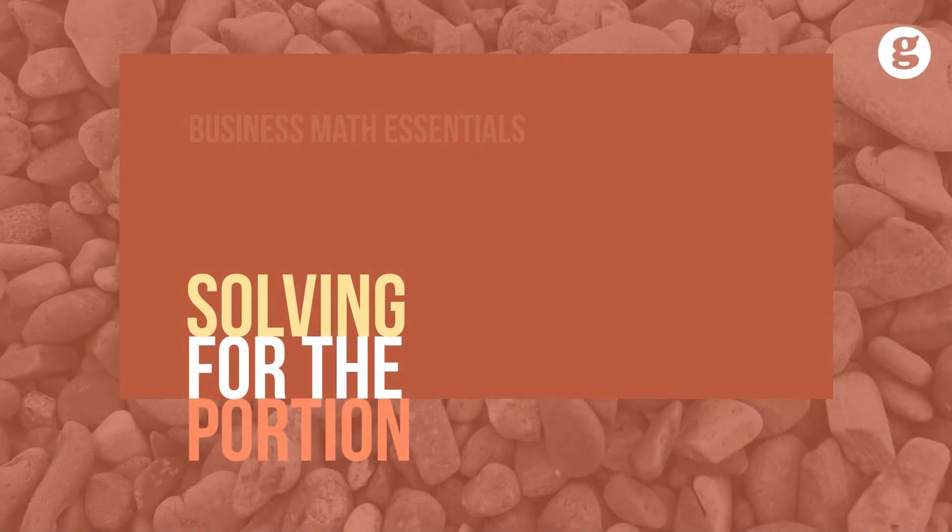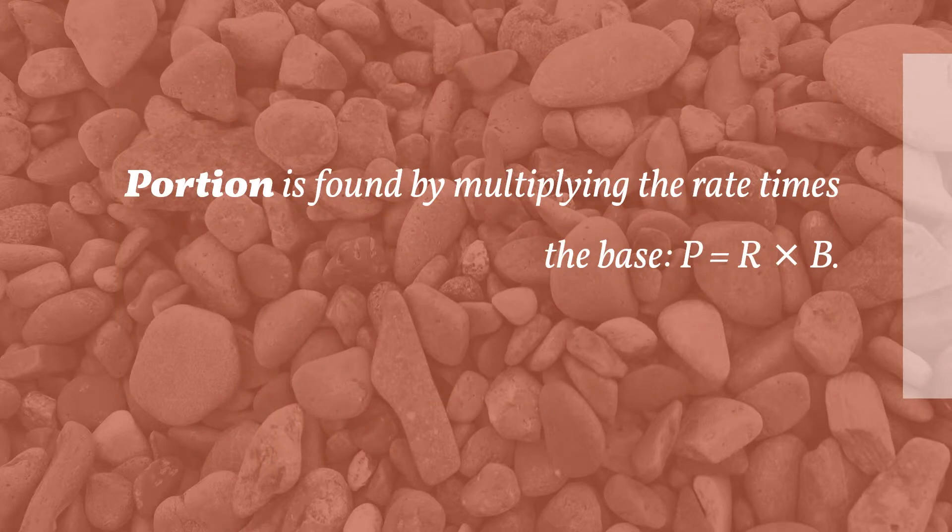The portion is a part of the whole and will always be in the same terms as the base. Let's take a look at solving for the portion. Portion is found by multiplying the rate times the base, P equals R times B.